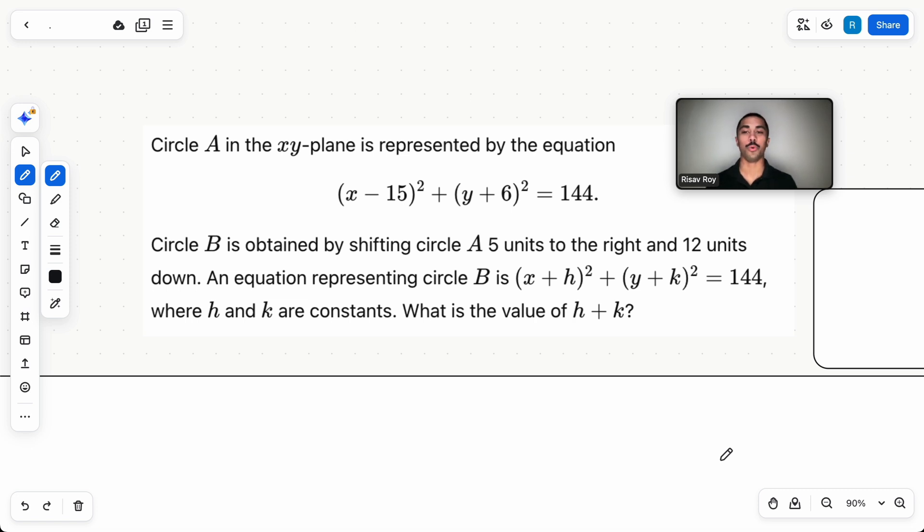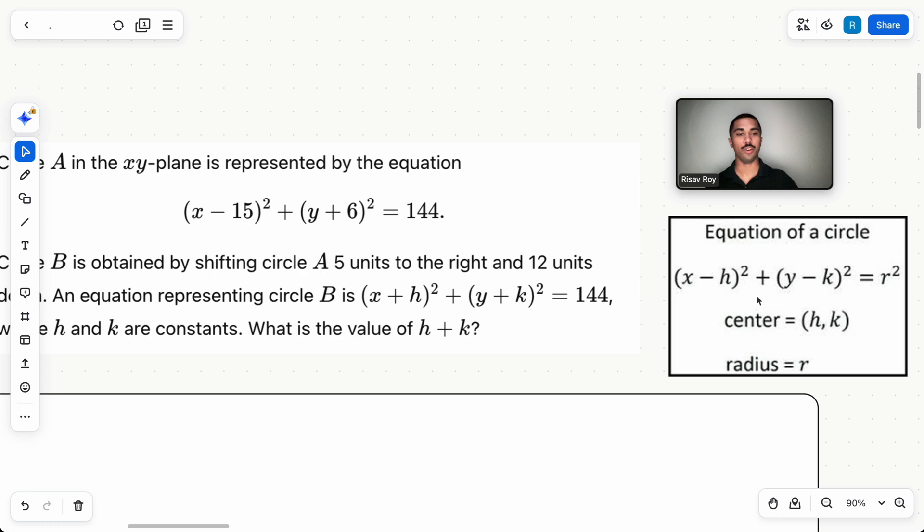Let's start with question number one. Circle A in the xy plane is represented by the equation (x - 15)² + (y + 6)² = 144. Circle B is obtained by shifting circle A five units to the right and 12 units down. An equation representing circle B is (x + h)² + (y + k)² = 144, where h and k are constants. What is the value of h plus k? Okay, what do we need to know for this question?